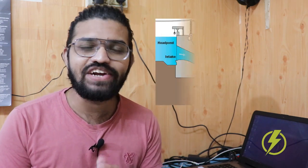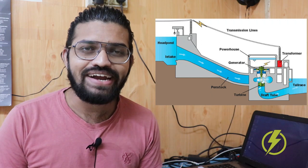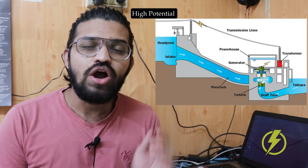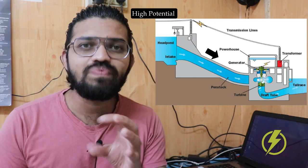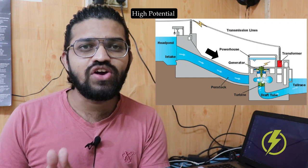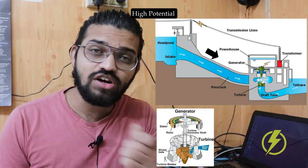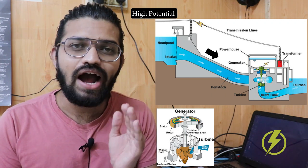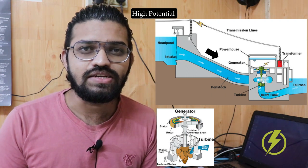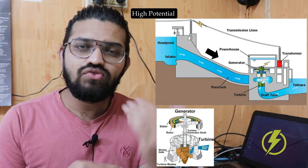We have seen how electricity gets produced by using hydraulic turbines. These hydraulic turbines work by storing water at a higher potential, allowing it to flow and convert potential energy into kinetic energy, which is then converted into mechanical energy. This mechanical energy gets converted into electricity by a generator coupled to the turbine.